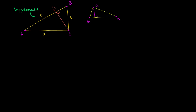First, triangle ADC is similar to the larger triangle, because both have a right angle. ADC has a right angle at D; if that angle is 90 degrees, the supplementary angle is also 90 degrees. The larger triangle clearly has a right angle — that's where we started. They also both share angle DAC, or BAC. So by angle-angle similarity, the two triangles are similar.